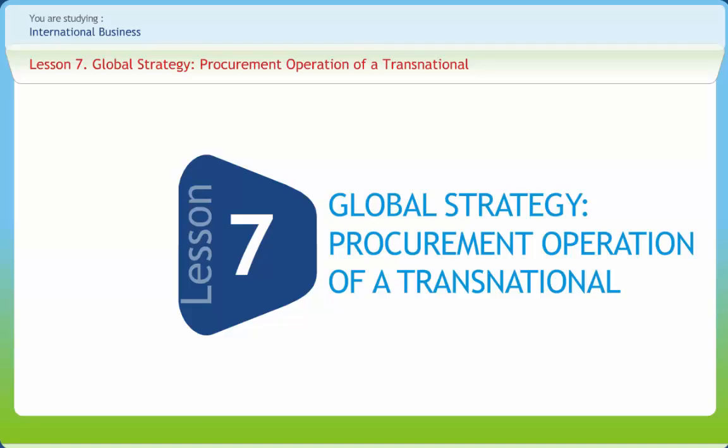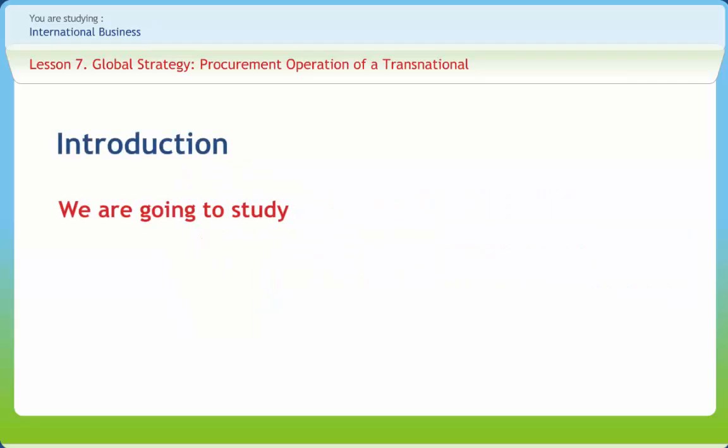Global Strategy Procurement Operations of a Transnational. Operations management is becoming more and more international in its scope. Even a firm which markets its products only within the domestic markets may be conducting its business operations internationally, like sourcing the inputs or finished products internationally or manufacturing the products abroad. A dynamic company will take advantage of the favourable conditions that exist anywhere in the world.